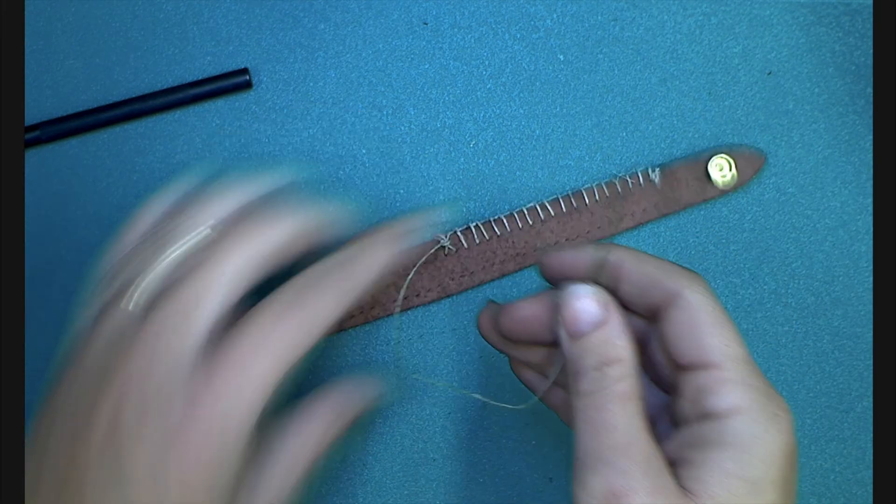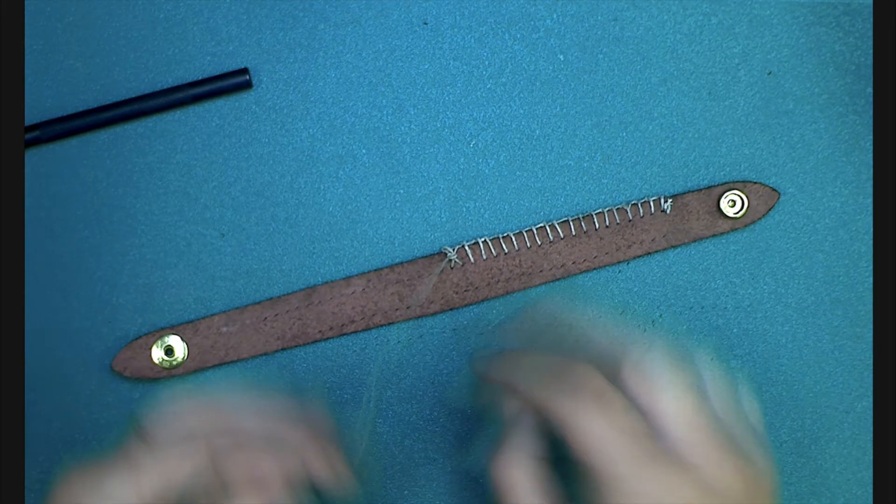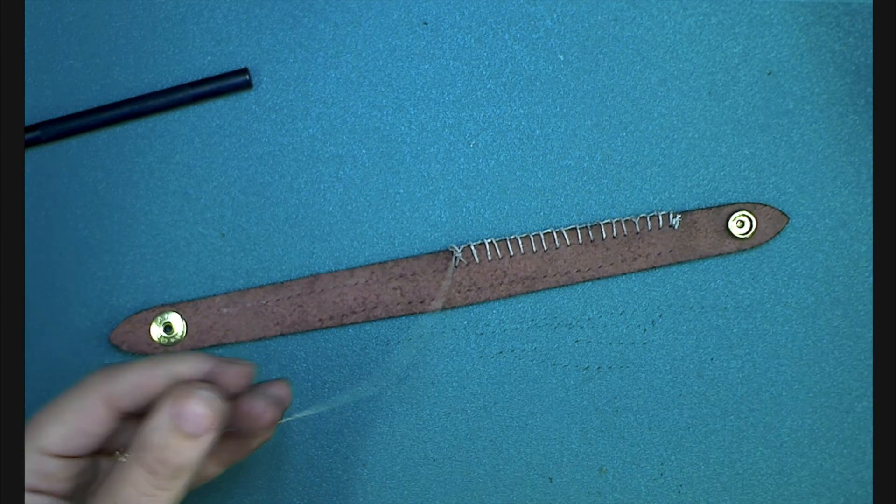Once you've reached the end of the holes at the end of your stitching, simply thread the needle twice through the loop to form a double knot and that will seal the end of your stitch.